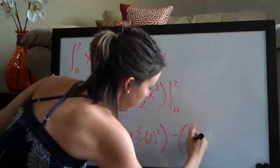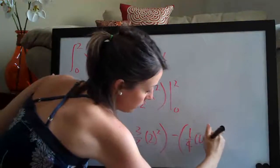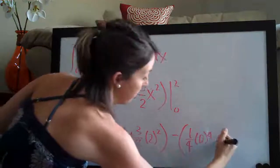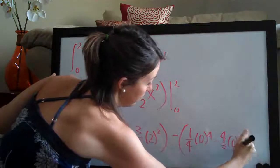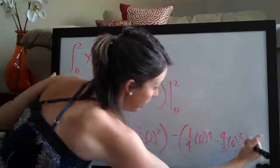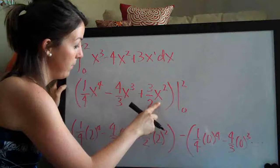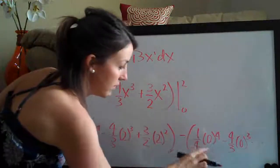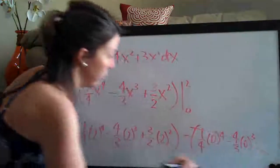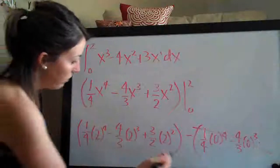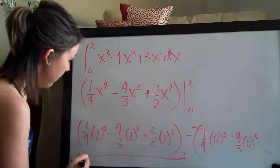So again, 1 fourth times 0 to the 4 minus 4 thirds, 0 cubed, and so on. You can see that if I plug in 0 here, it's going to be 0. This whole thing is going to be 0 because it's each time multiplied by 0. So that's just going to go away. So all we need to focus on is this here.